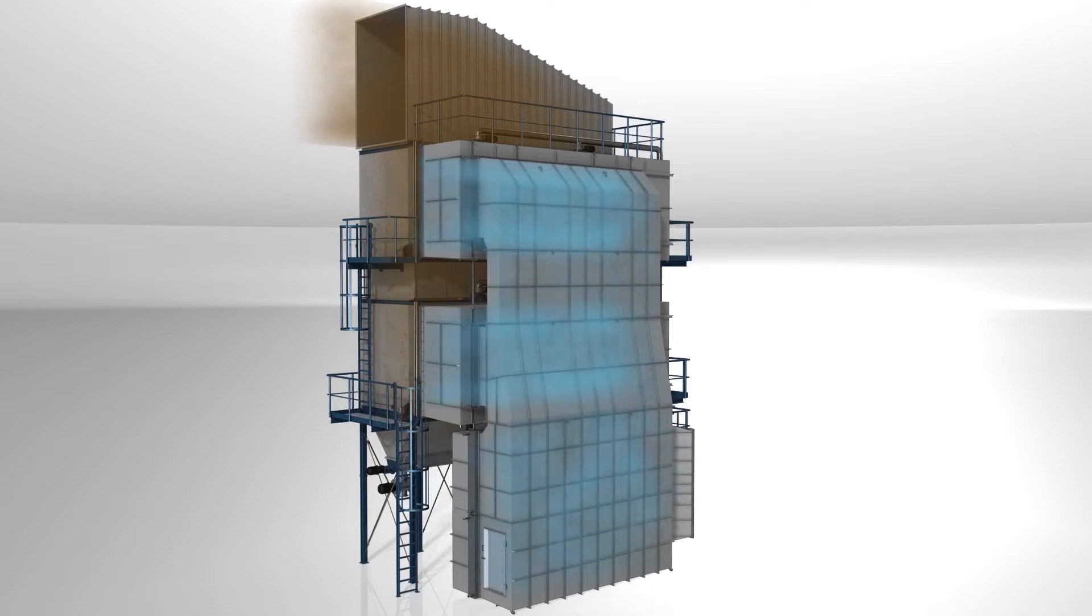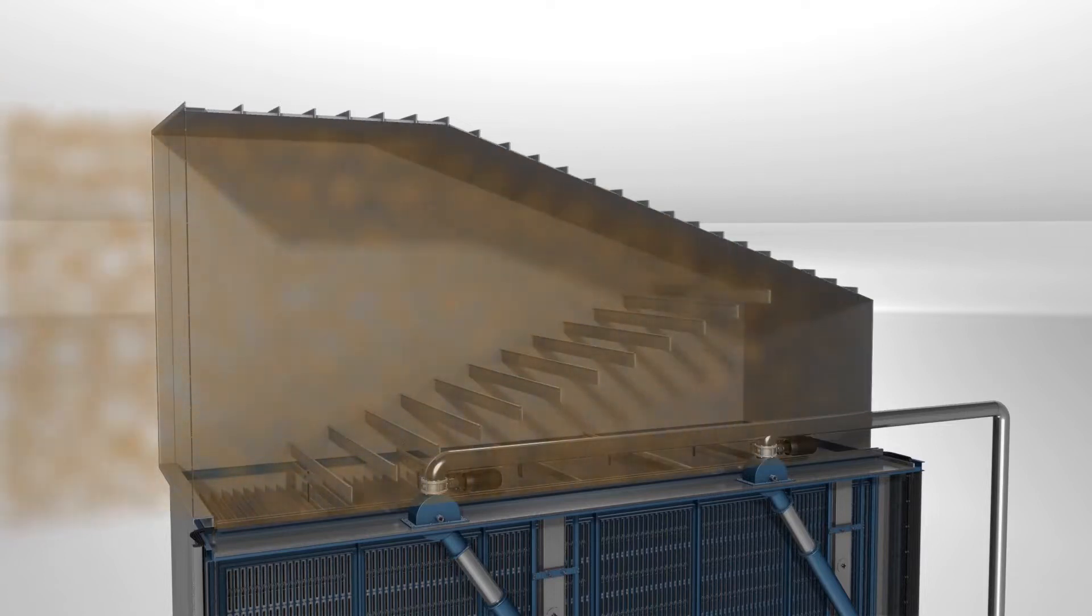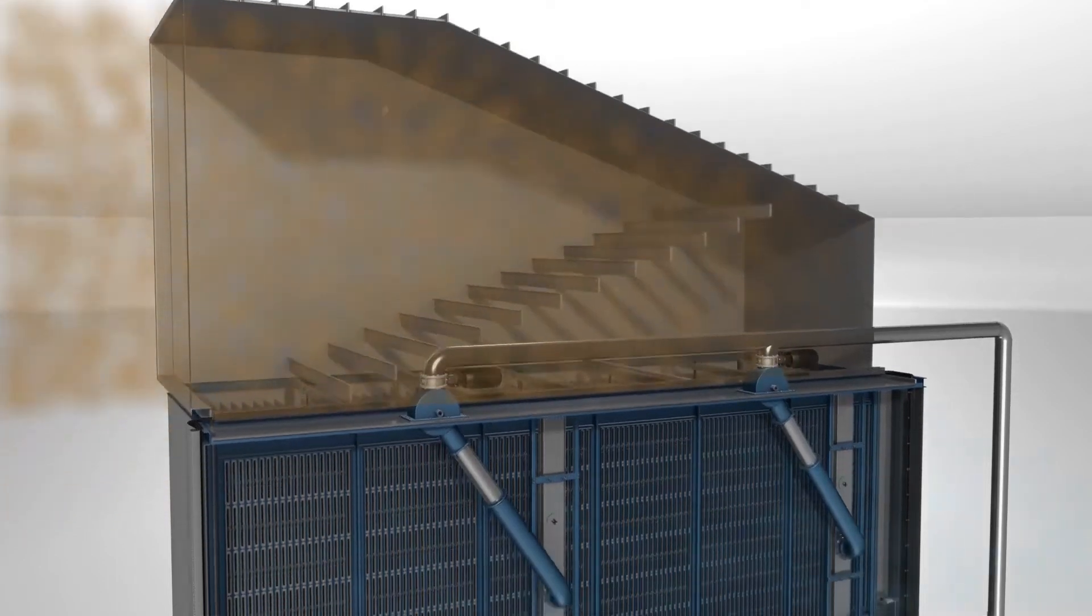The airflow direction through the filter is from top to bottom. The dirty gas enters through the dirty gas hood. Baffle plates reduce the speed of solid particles and ensure homogenous distribution of the dust load over the total filter length.